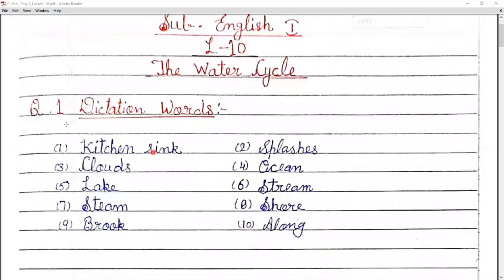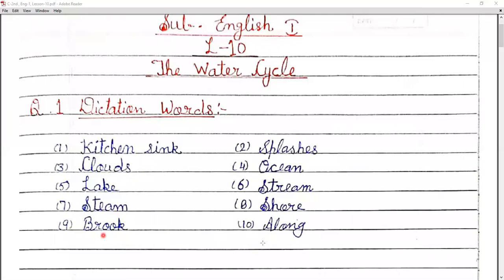Let's get started with question number one: dictation words. Kitchen, sink, clouds, splashes, ocean, lake, stream, steam, shore, brook, along.